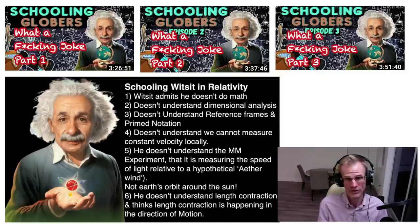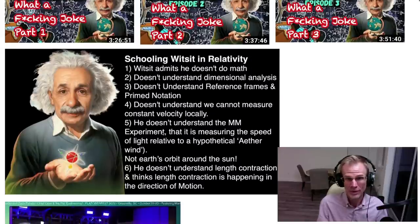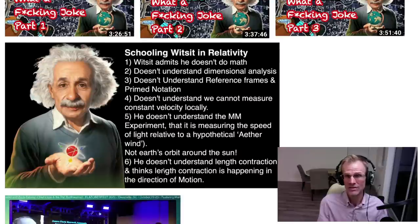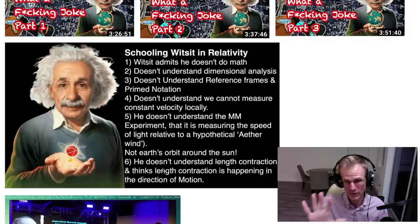These videos really are a joke, because he's just going by quotes and he doesn't understand the math. He doesn't understand dimensional analysis. He doesn't understand what reference frames are. He doesn't understand that we cannot measure constant velocity locally. He doesn't understand the Michelson-Morley experiment — not the fundamental aspect that it's not about measuring the orbit of the Earth around the Sun. And he doesn't understand length contraction. He still stubbornly thinks that lengths contract within the frame that we're in, even though we can't detect it — he thinks there's an actual physical shrinkage in our frame.